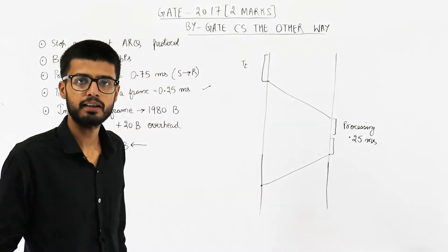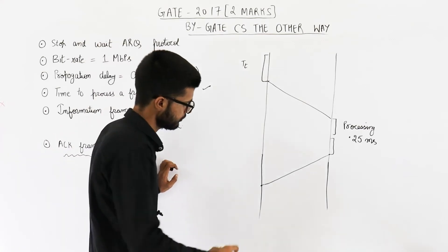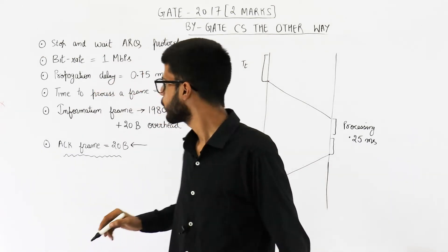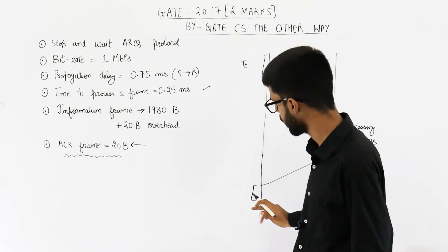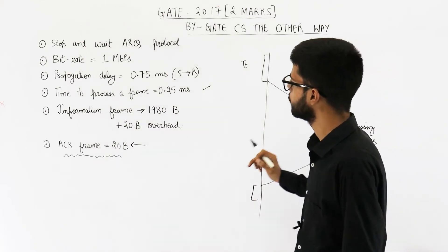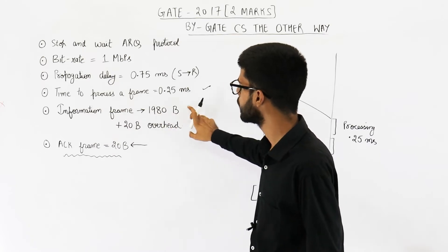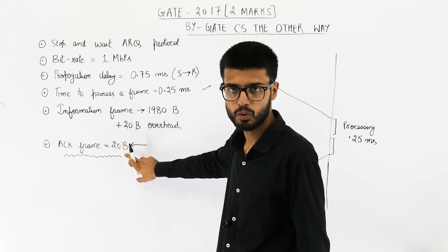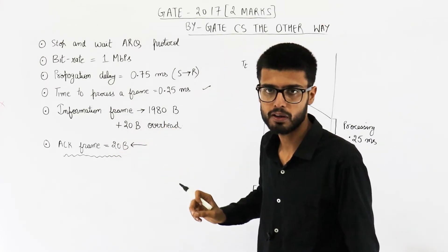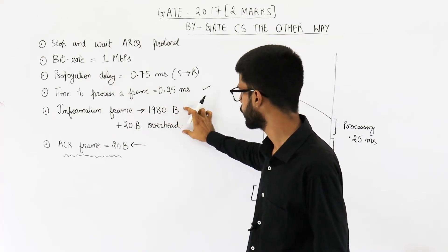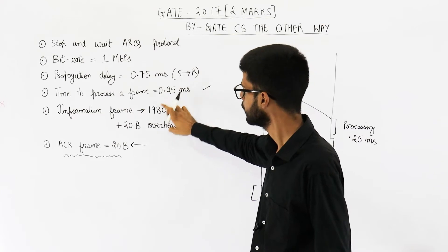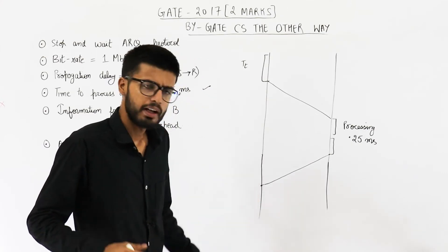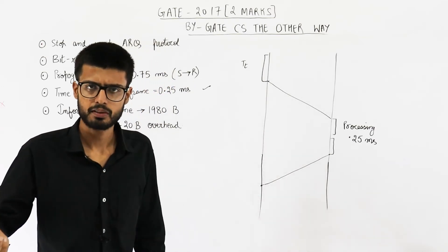At this point, the sender will get the acknowledgement packet. We can consider that some processing is done here too, but we are going to ignore it because the question hasn't clearly mentioned processing for the acknowledgement frame. Also, the information frame is 2000 bytes and the acknowledgement frame is only 20 bytes, so even if there is some processing required for the acknowledgement, it will be comparatively a very small amount of time. We cannot say both frames require the same processing time, so we can just ignore the acknowledgement processing time.